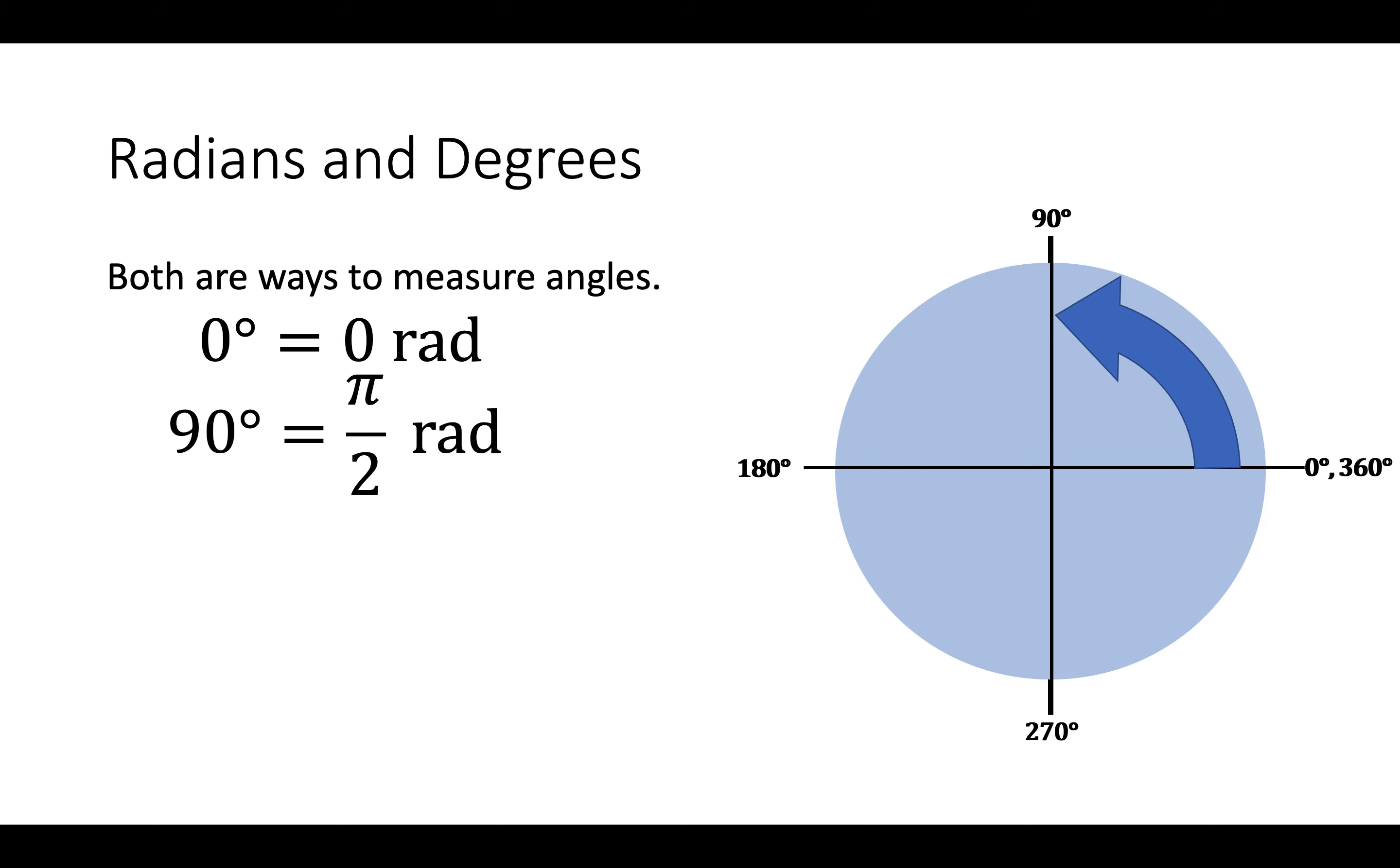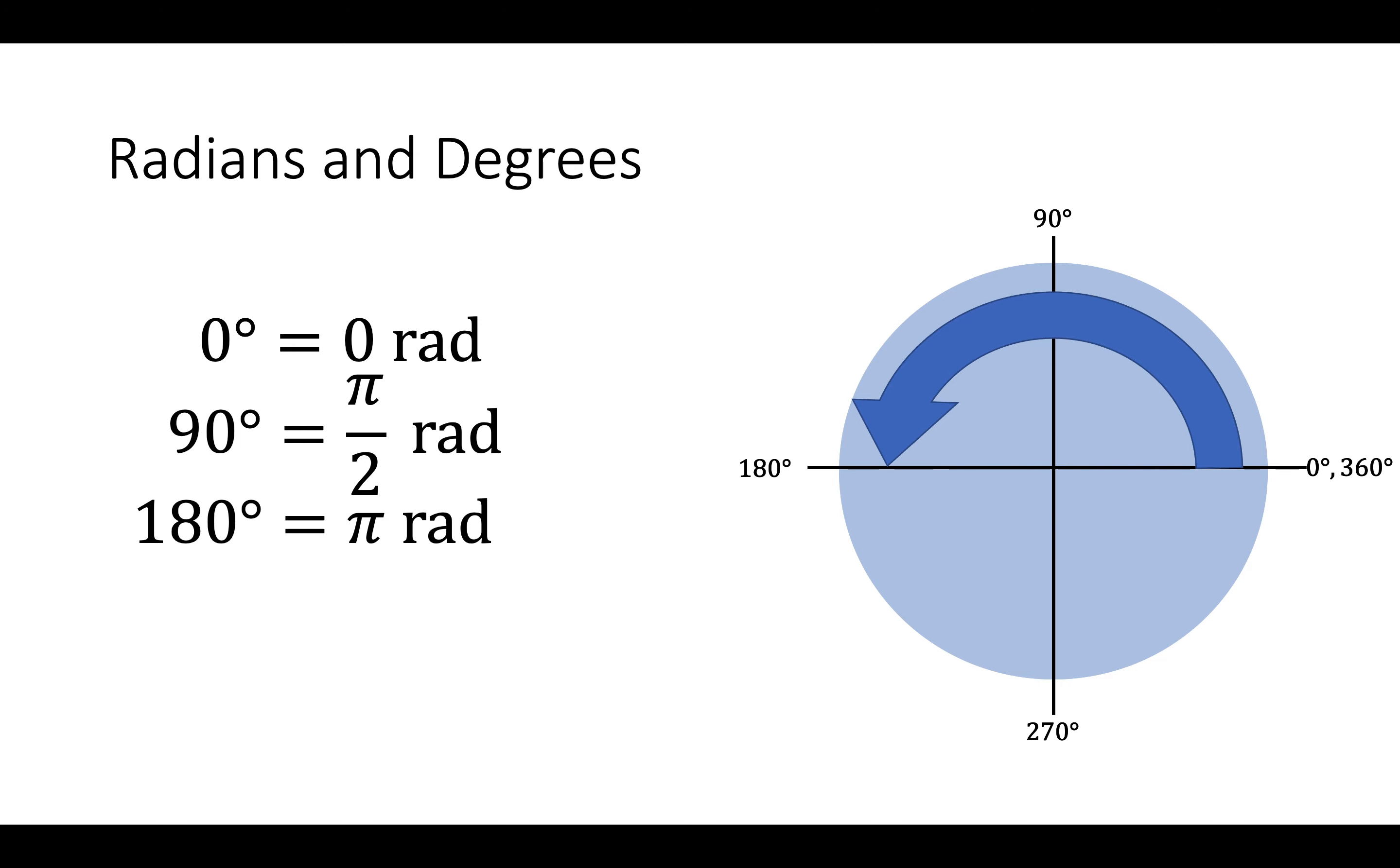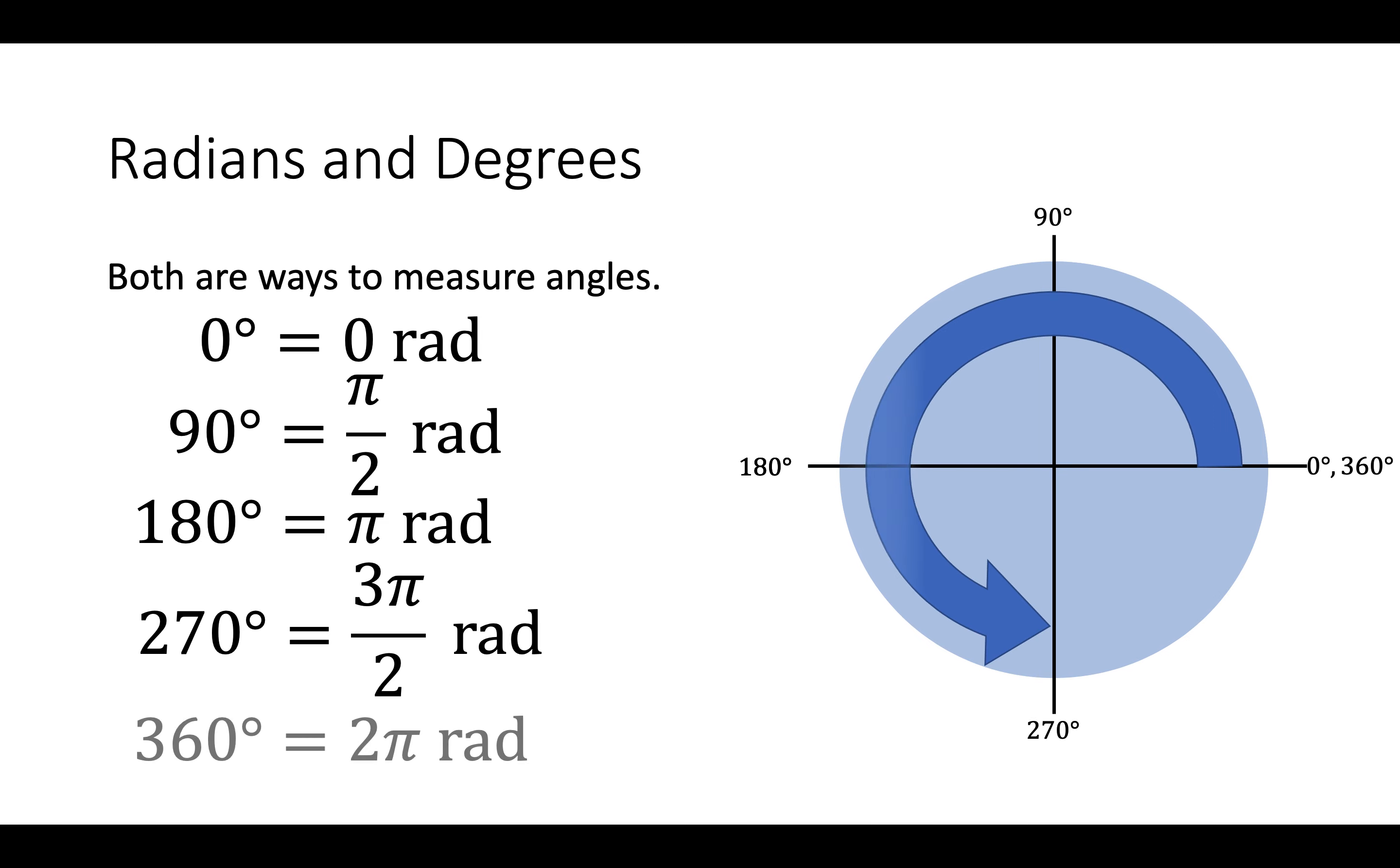90 degrees is π over 2 radians. 180 degrees is π radians. 270 degrees is 3π over 2 radians. And 360 degrees is 2π radians.